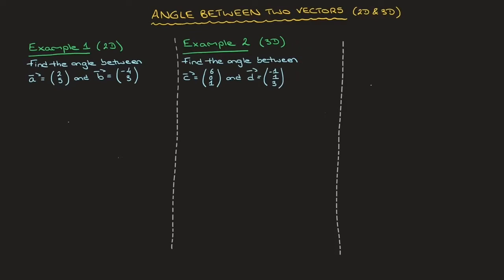Given a vector u and a vector v, we can calculate the acute angle, which I'll call theta, between these two vectors using the following. Cosine of theta is equal to the absolute value of the dot product of u and v.